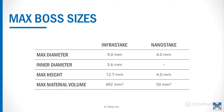Regarding boss size maximums: Infrastake is designed for both large and small bosses. We can do boss diameters up to 9 millimeters with Infrastake, whereas Nanostake tops out at 4 millimeters. We don't recommend Nanostake for hollow bosses. The inner diameter for Infrastake is 5.6 millimeters, but there's no equivalent for Nanostake. The maximum height for Infrastake is 12.7 millimeters, whereas Nanostake is 4 millimeters. The maximum material volume is 492 cubic millimeters for Infrastake versus 50 cubic millimeters for Nanostake.